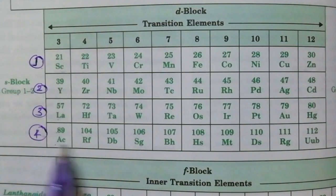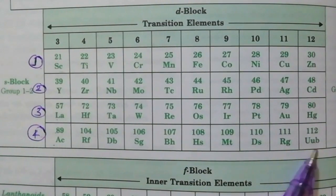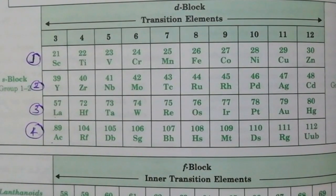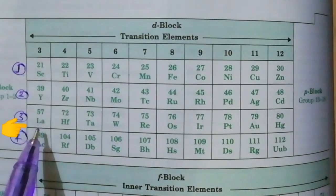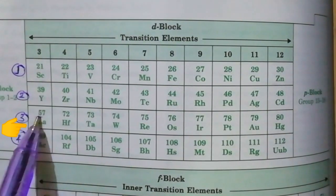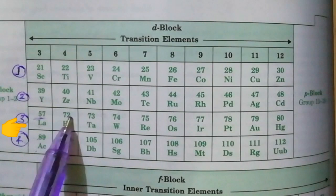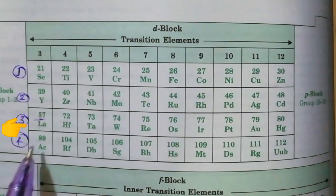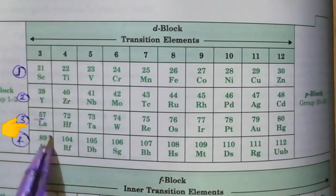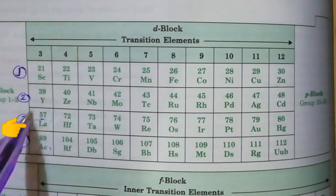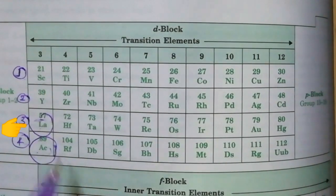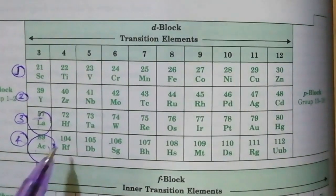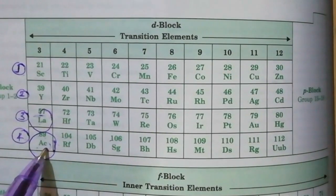Here there will be a chance for confusion, because for the third and fourth transition series we studied that the starting elements are hafnium and rutherfordium — but here instead we see lanthanum and actinium. No need for confusion: these elements represent the F block. One is from the lanthanoids and another from the actinoids — they just represent the F block elements.